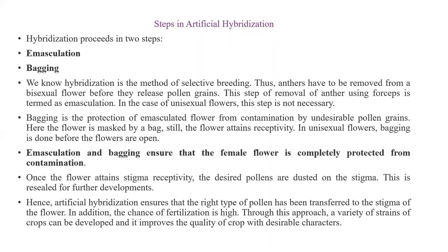Bagging is also done to avoid contamination from undesirable pollen grains — the flower is covered by a bag. For unisexual flowers, bagging is done before the flowers open. Emasculation and bagging together ensure the female flower is completely protected from contamination. Once the flower attains stigma receptivity, the desired pollens are dusted onto the stigma, and the bag is resealed for further development.